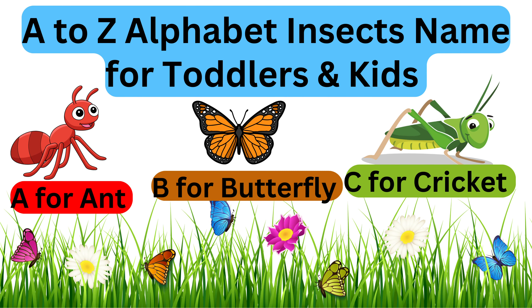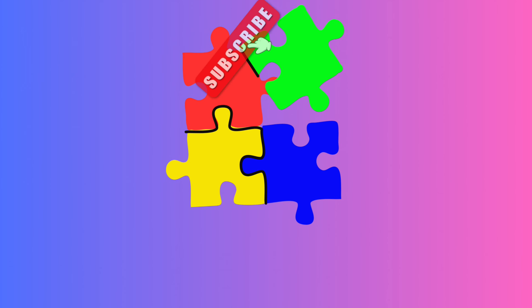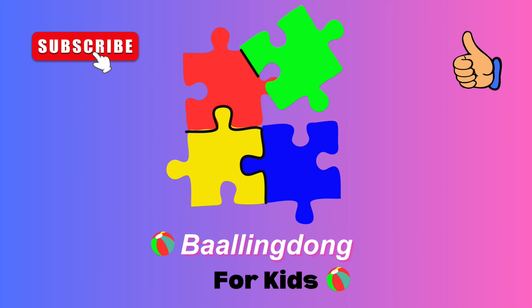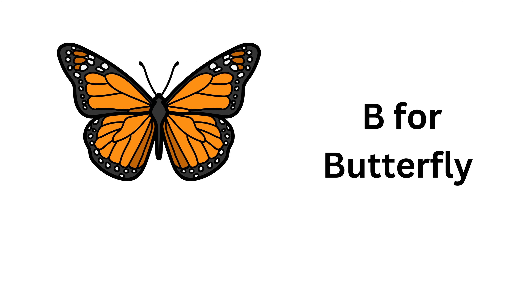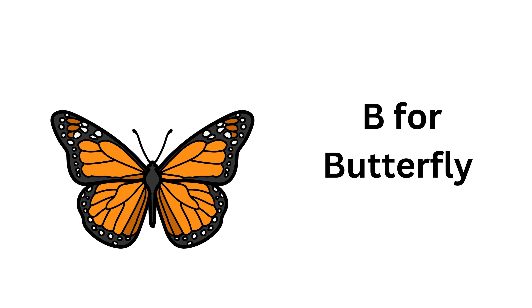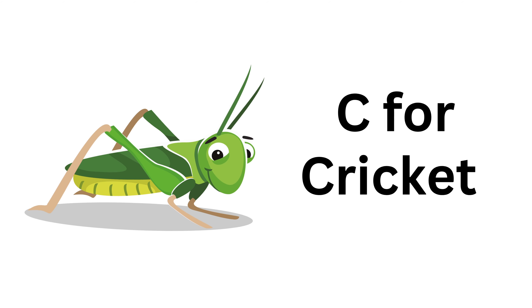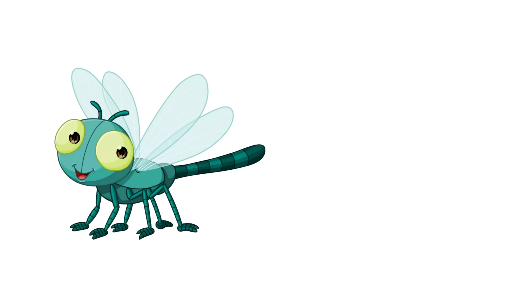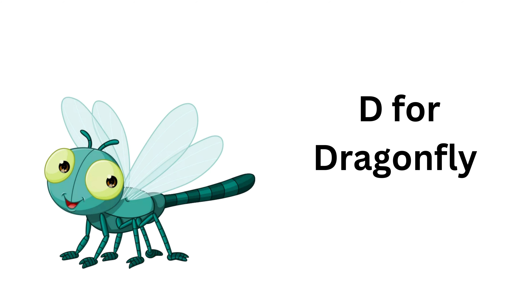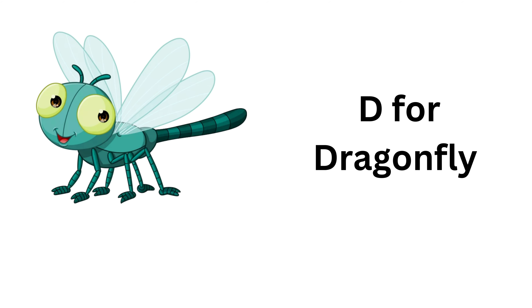A to Z Alphabet Insects name for toddlers and kids. Please subscribe to our Rolling Down channel. A for Ant. B for Butterfly. C for Cricket. D for Dragonfly.